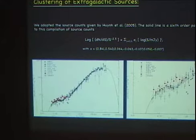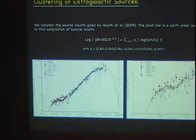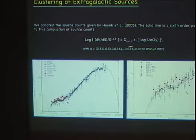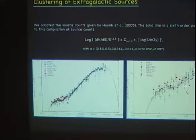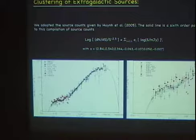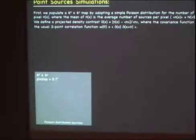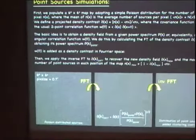For the dN/dS, we found a nice paper that compiled all the sources at 1.4 GHz and fitted the distribution with a six-order polynomial. So the only thing you have to remember is that I'm going to use a formula like that to tell me how many sources I have at that frequency. I know the clustering, and try to remember this strange curve because I have to reproduce it by the end of the day.